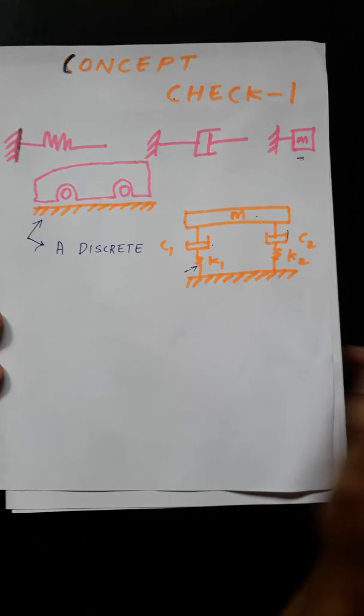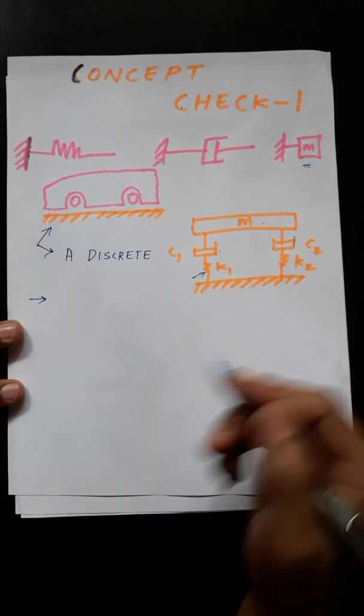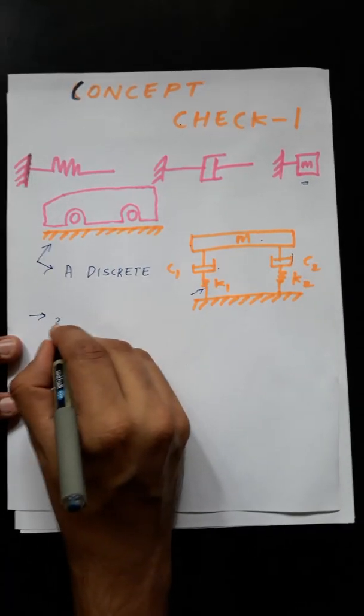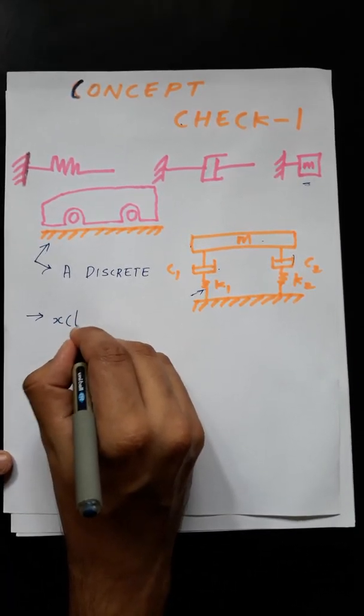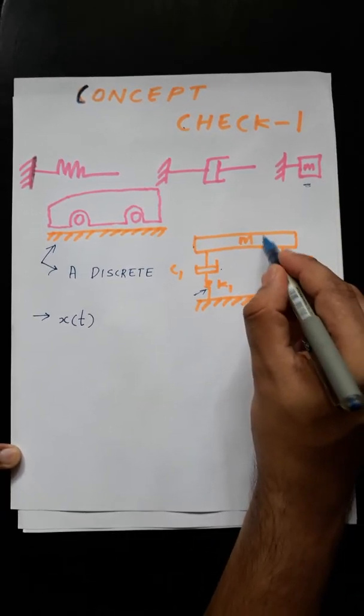So for example, the whole mass of the automobile is assumed to occupy a point. This will be the, if you sum up all the masses, and this is idealized as a point mass like this.